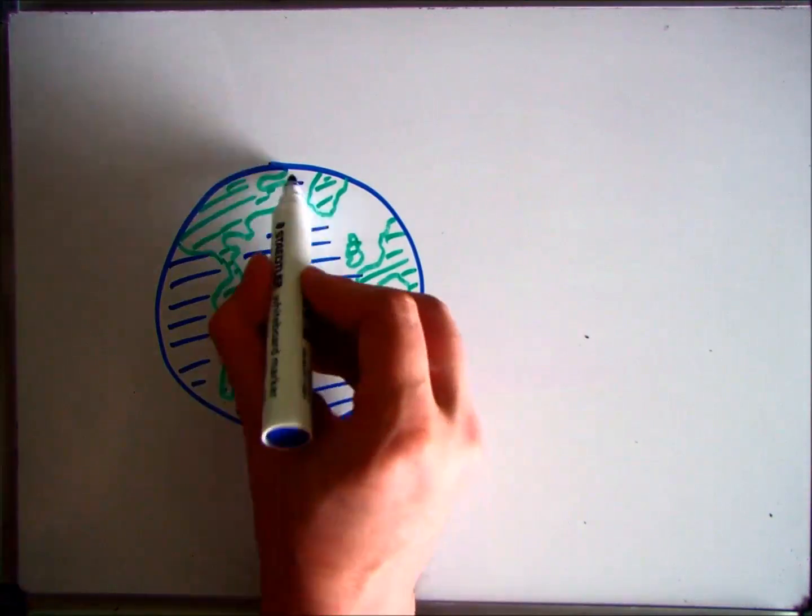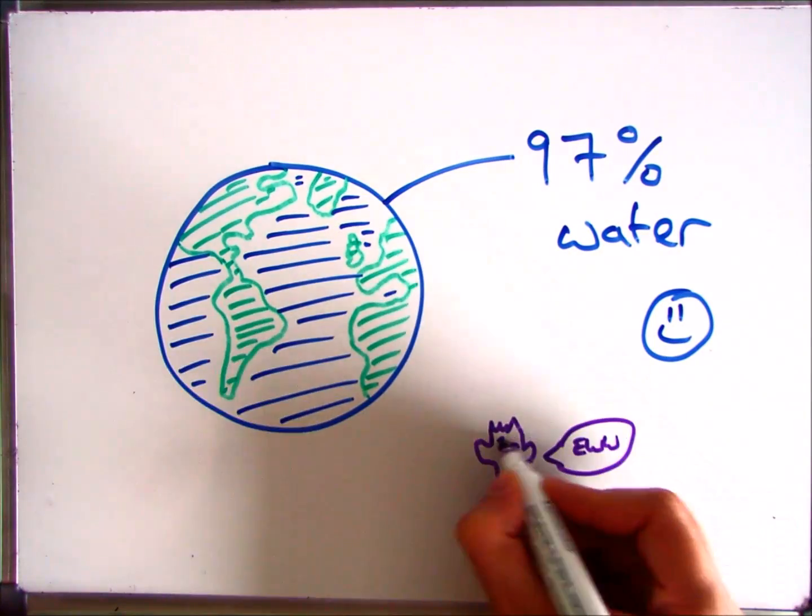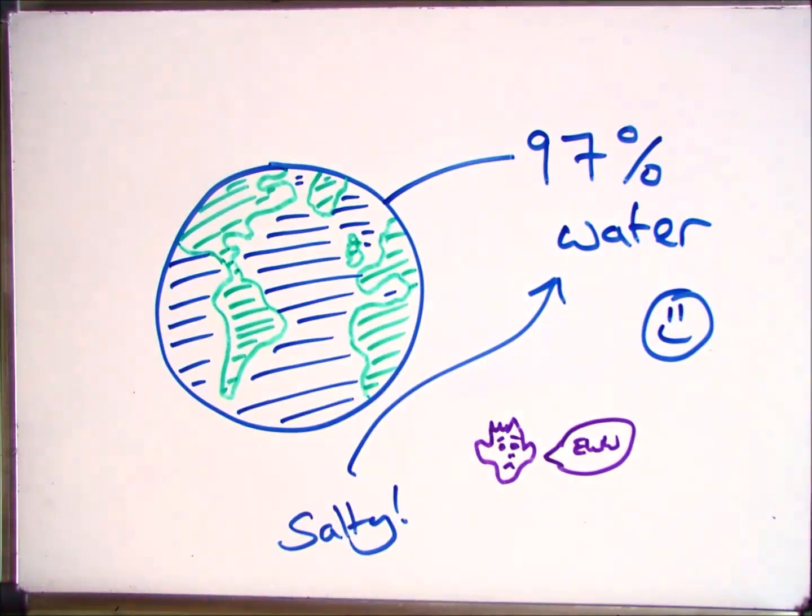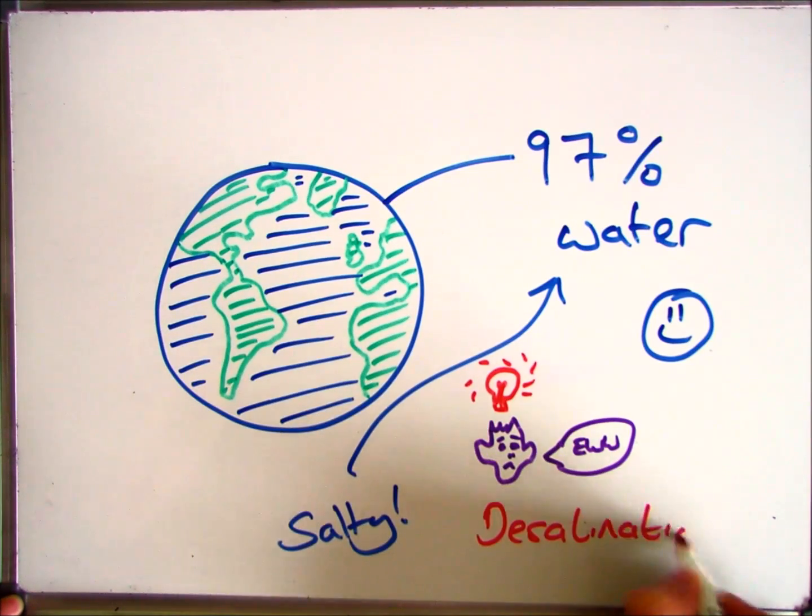One of the things it's important to know, which you may have realized if you've been to the beach, is that 97% of that water is salt water. So how do we take that salt water and turn it into drinkable water? The keyword you're looking for is desalination.